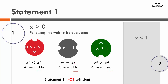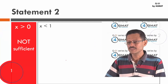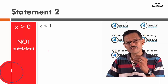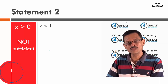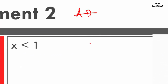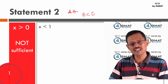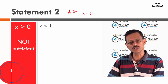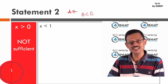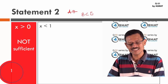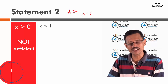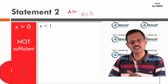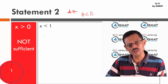Now for Statement 2: x < 1. Since Statement 1 is not sufficient, we can eliminate answer choices A and B, narrowing to B, C, or E. Let's evaluate Statement 2 alone. With x < 1, I'll check all relevant intervals and border points systematically.